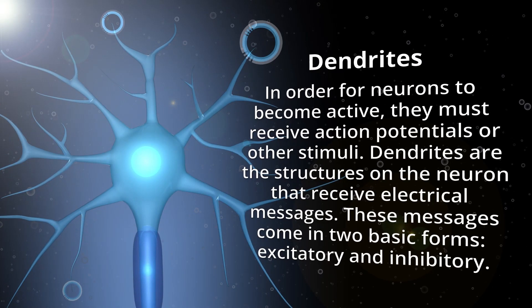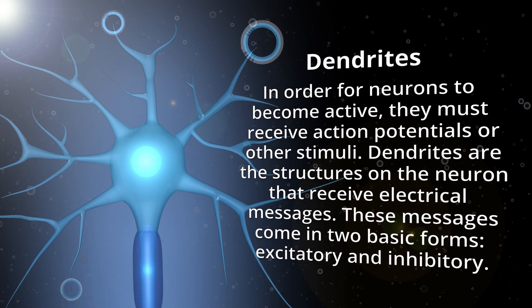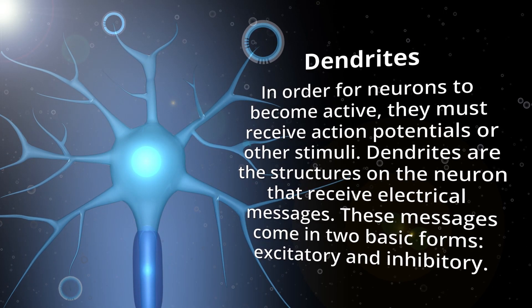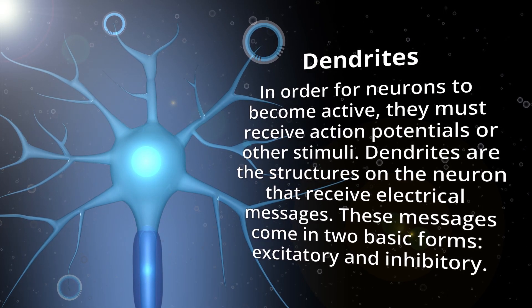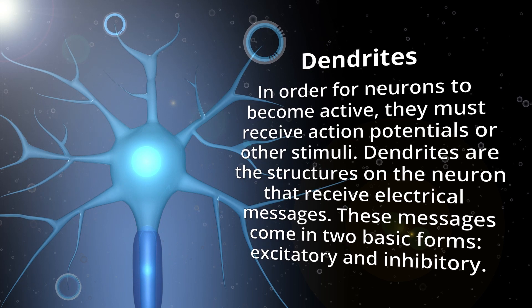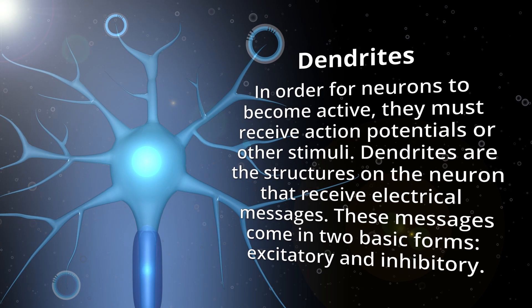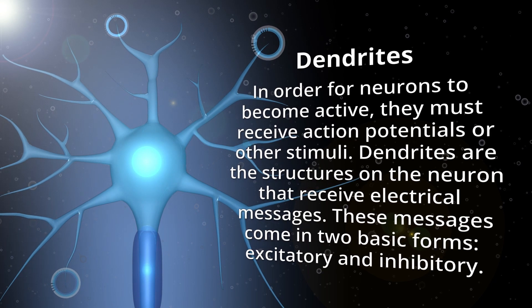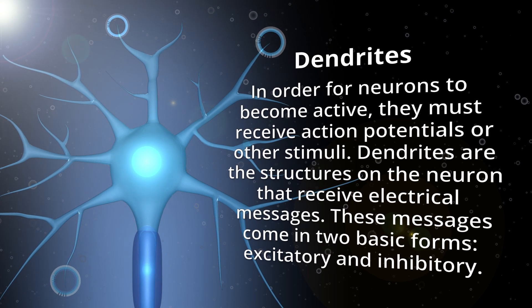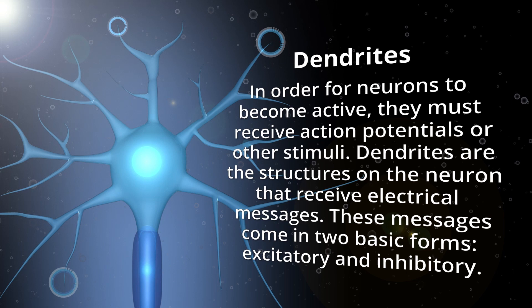Dendrites. In order for neurons to become active, they must receive action potentials or other stimuli. Dendrites are the structures on the neuron that receive electrical messages. These messages come in two basic forms: excitatory and inhibitory.